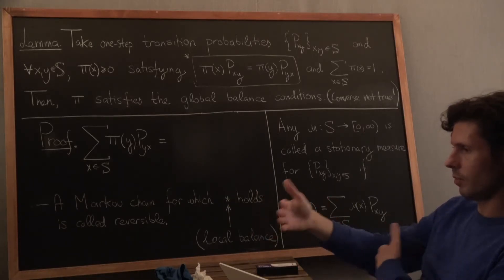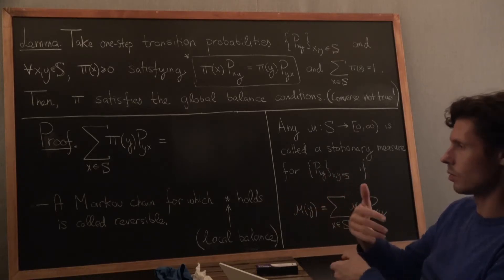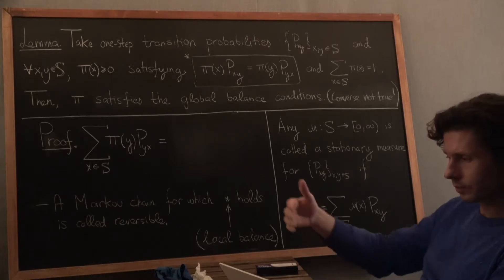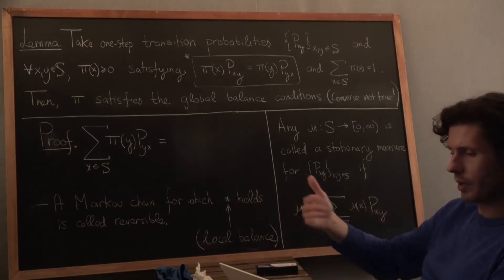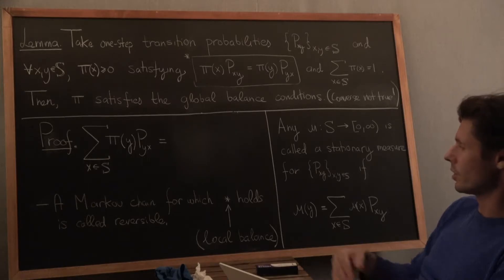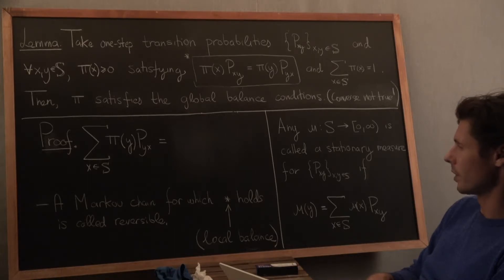And that was a property of the Ehrenfest urn that we saw in the first lecture. You had particles of gas exchanging between the two urns, and you can show there that the amounts of them are balanced in some way. And that has to do with the reversibility of that process, which was important in the development of that Ehrenfest example.